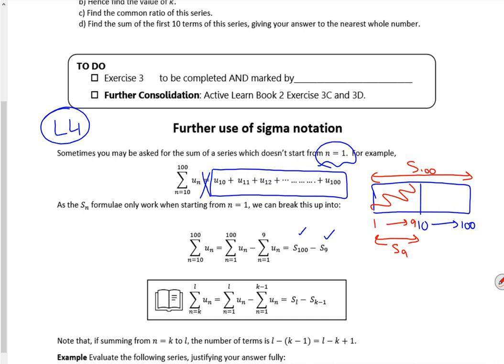Sometimes it's quite nice to think of it as maybe like a block. So I want from the 10th term all the way up to the 100th term. So that means that I have to chop off the first term through to the 9th term. So I do the first 100 and I take away the first 9.